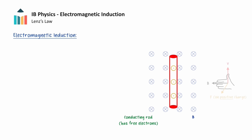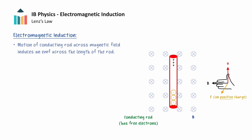If we now use the right-hand slap rule, and remembering that electrons are negatively charged, the force on the electrons will be directed downwards as the rod moves through the magnetic field. As a result, an excess of electrons will accumulate at the bottom end of the rod, making it negatively charged, and the deficit of electrons at the top end of the rod will make the top end positively charged. A potential difference now exists between the ends of the rod, and an EMF has been induced across the length of the conducting rod.